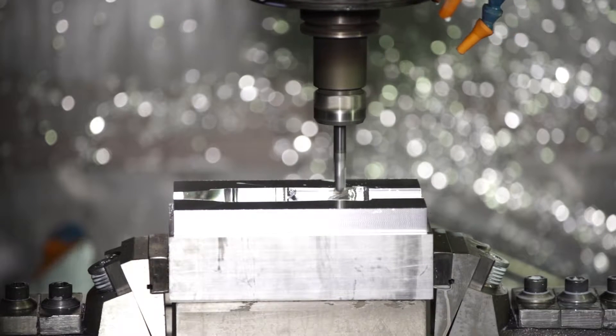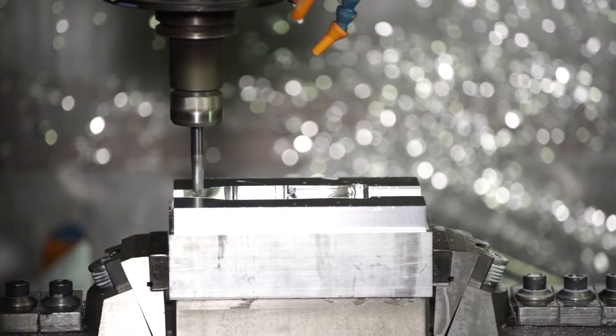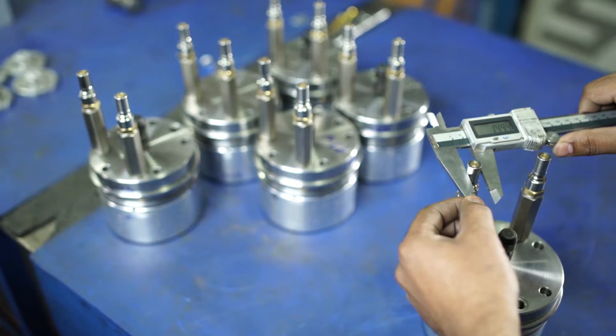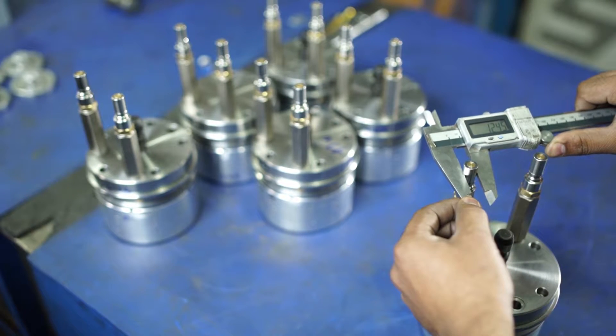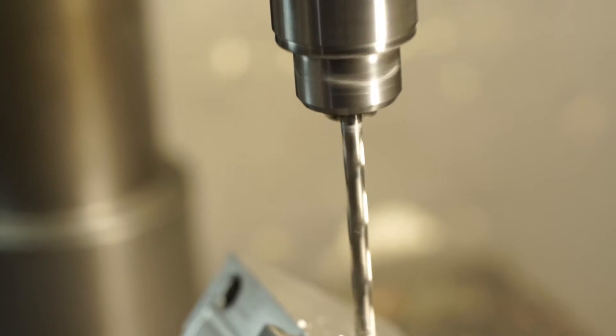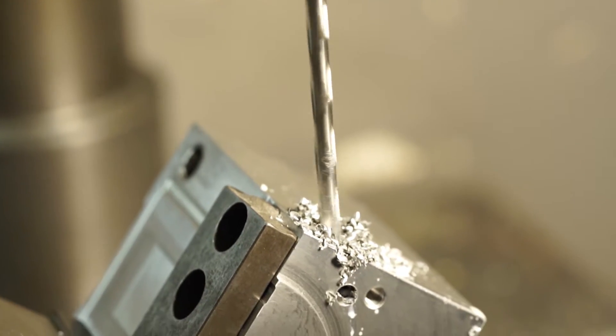Precision is what defines every aspect of the mold manufacturing process at Avanti Polymolds. Our customers demand exacting standards of accuracy down to a thousandth of a millimeter, which we achieve consistently. This is a result of absolute attention to detail at every step of the mold making process.